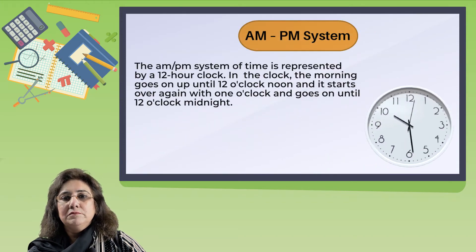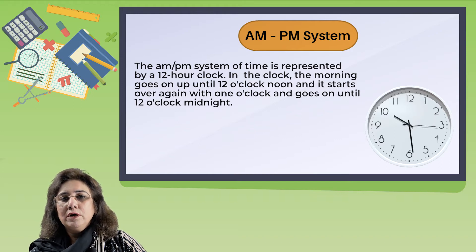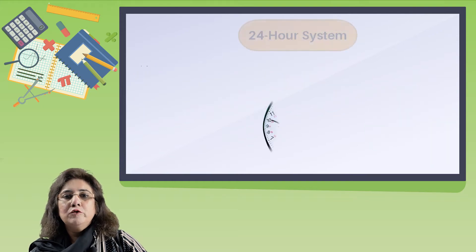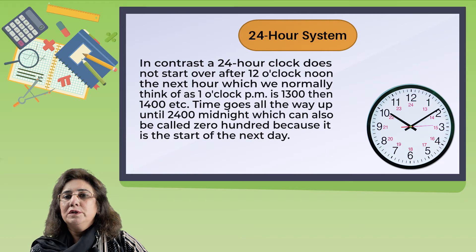The AM/PM system of time is represented by a 12-hour clock. On this clock, the morning goes up until 12 o'clock noon, and then it starts over again with one o'clock and goes on until 12 o'clock midnight. In contrast, a 24-hour clock does not start over after 12 o'clock noon.